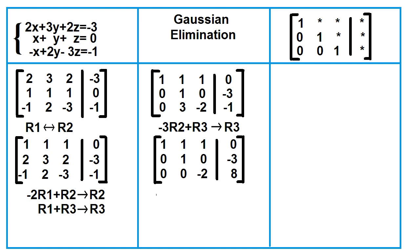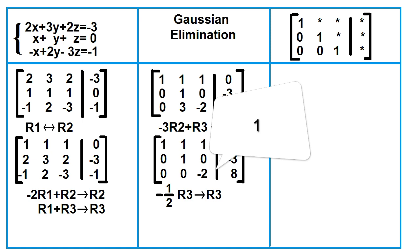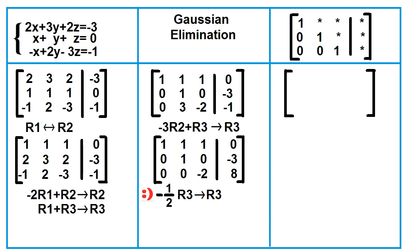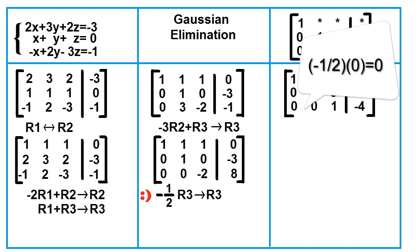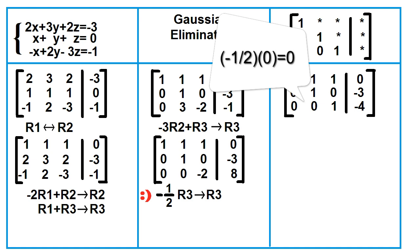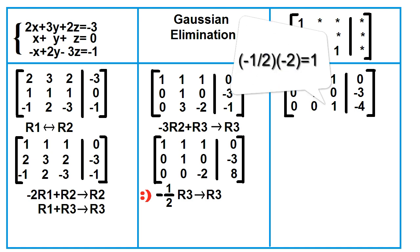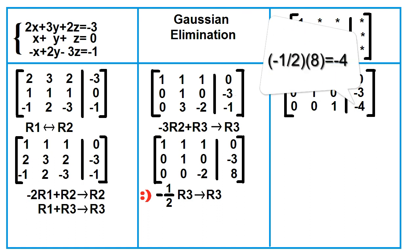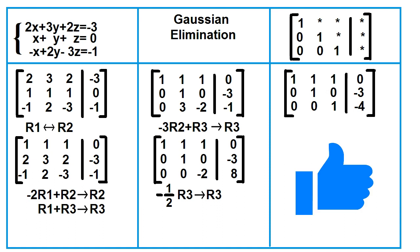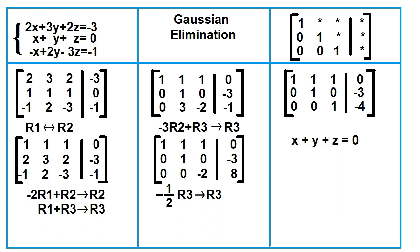We're done with column 2. Next is column 3. To make row 3, column 3 equal to 1, multiply row 3 by negative 1 half, then replace row 3 with the product. Copy row 1 and row 2. Negative 1 half times 0 is 0; negative 1 half times 0 is 0; negative 2 times negative 1 half is 1; 8 times negative 1 half is negative 4. The matrix is now in row echelon form, and the system of equations is x plus y plus z equals 0, y equals negative 3, and z equals negative 4.